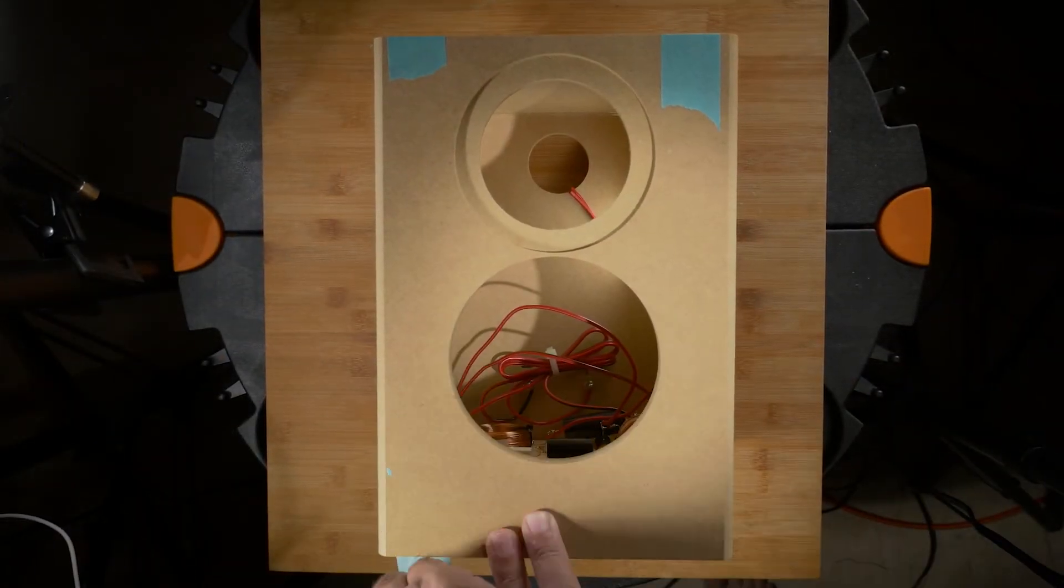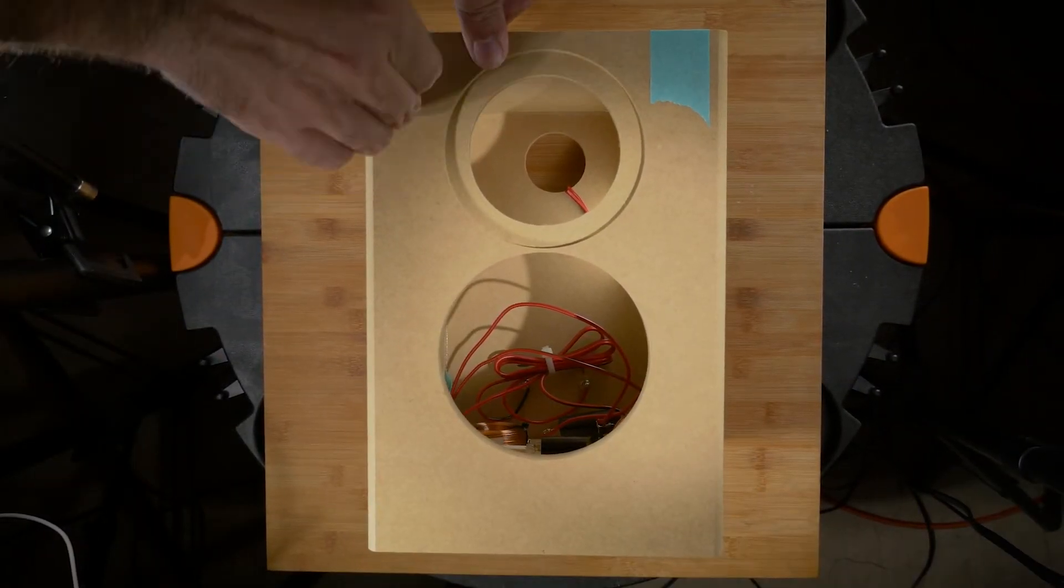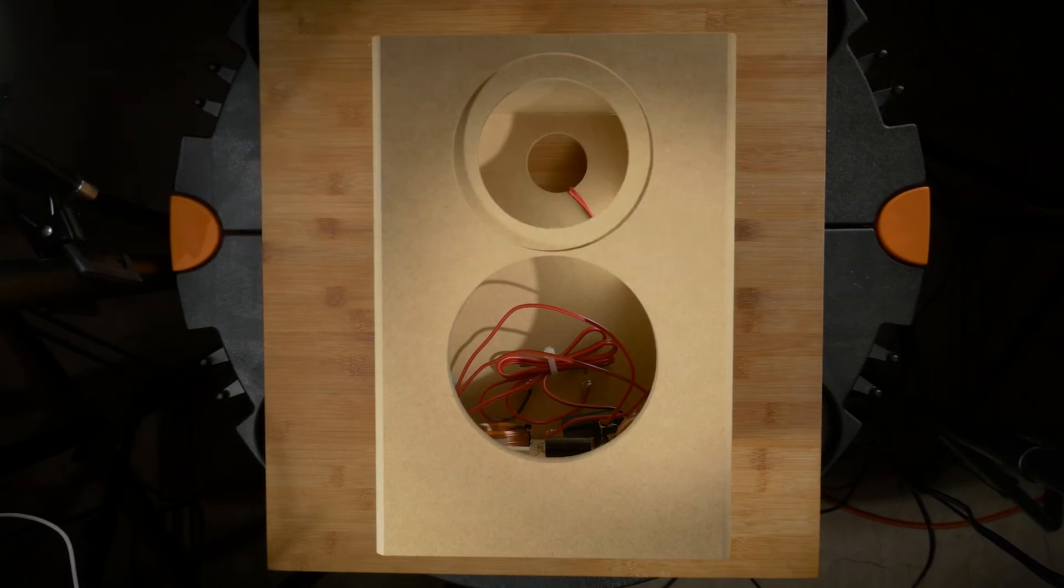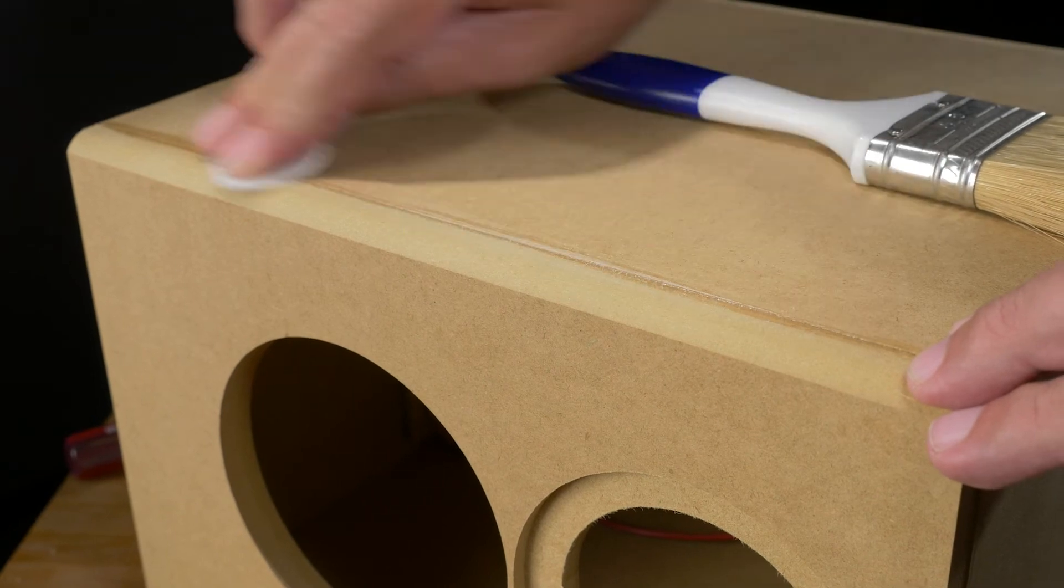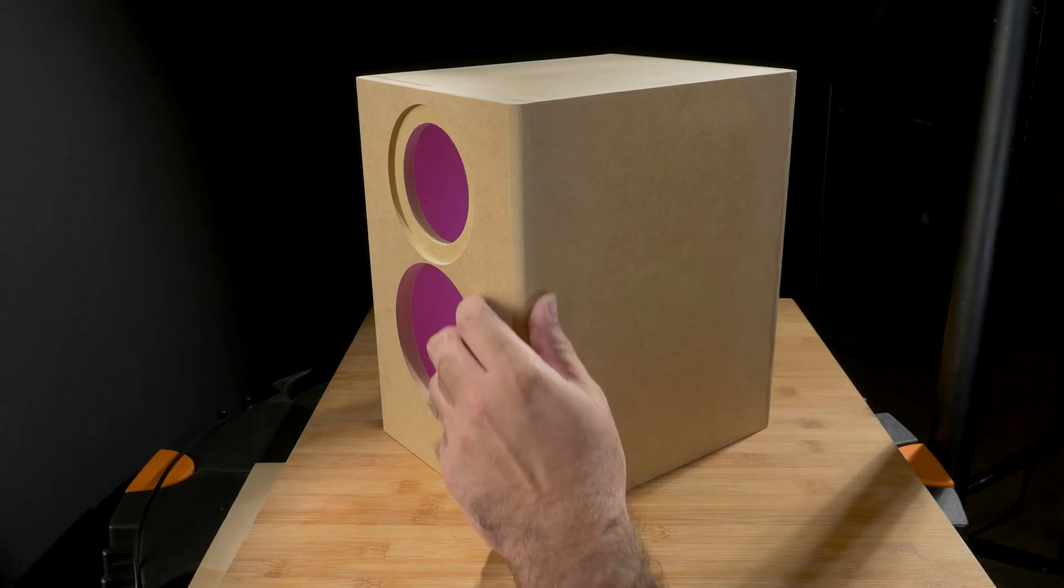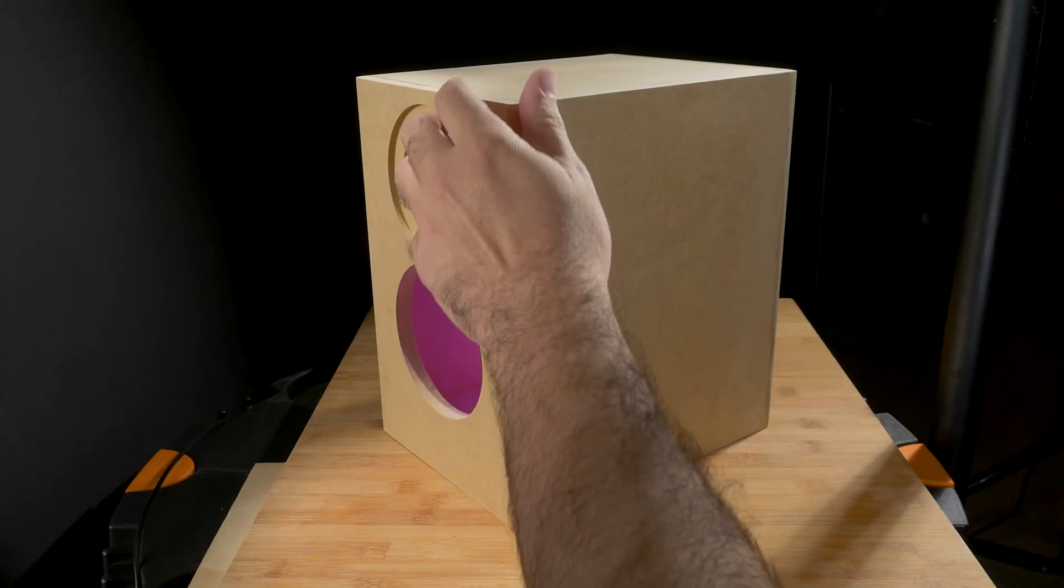Now that we are done with our cabinet, the last step here is to sand down all of the joints. Just watch out, MDF sawdust is not very good for you. You just want to go through and make sure you have a very nice smooth finish.